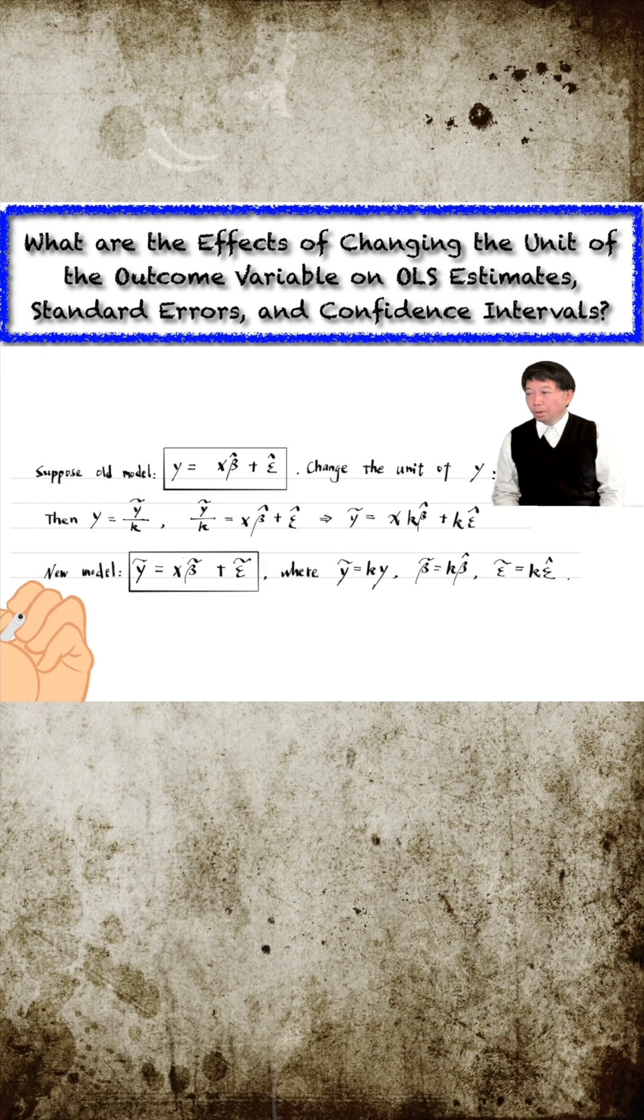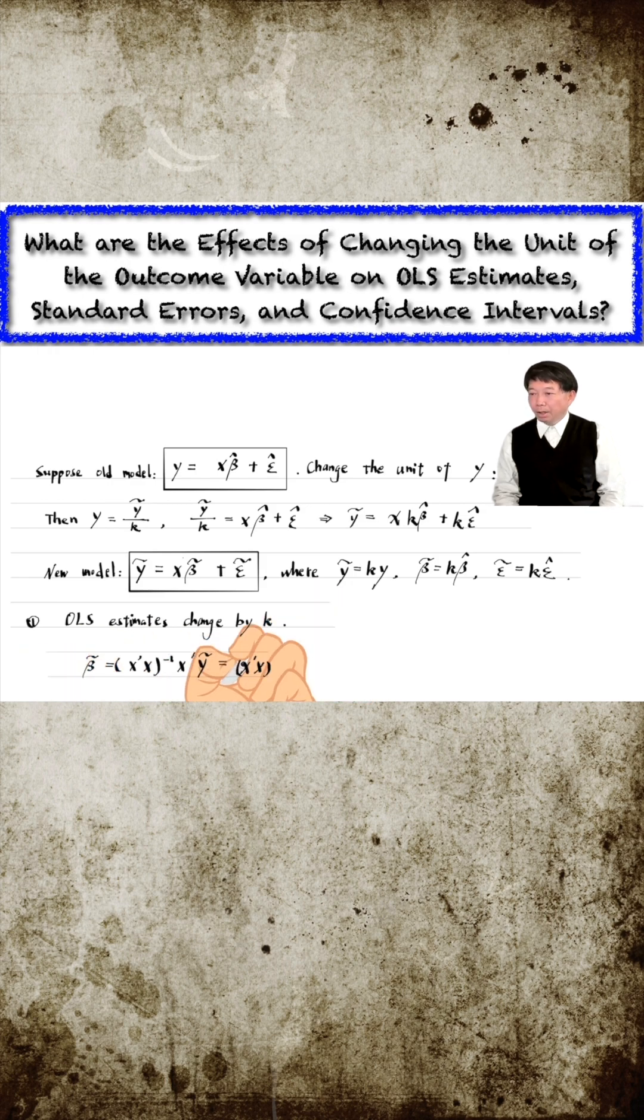That is, the new OLS estimates are k times the old OLS estimates. We can also prove it using the matrix form formula for the new OLS estimator.